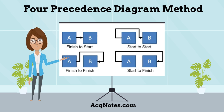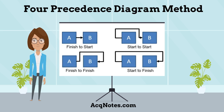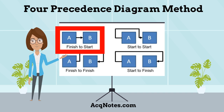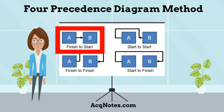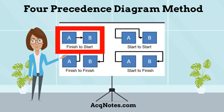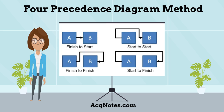The precedence diagram method has four ways for developing the diagram. The first is finish to start — in this dependency, an activity cannot start before a previous activity has ended. This is the most commonly used dependency.